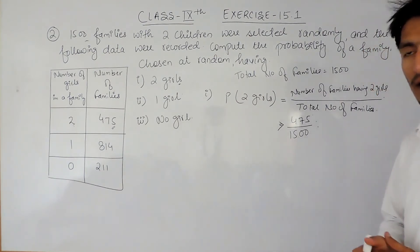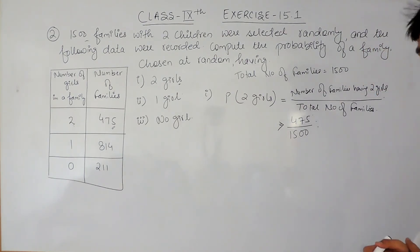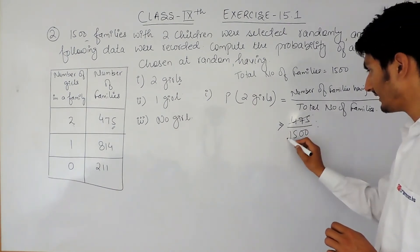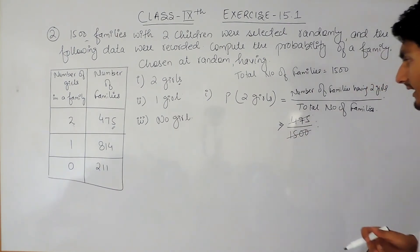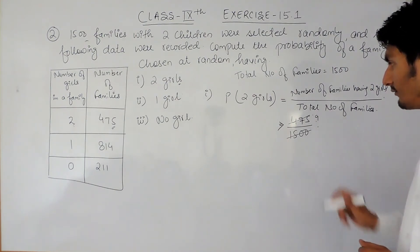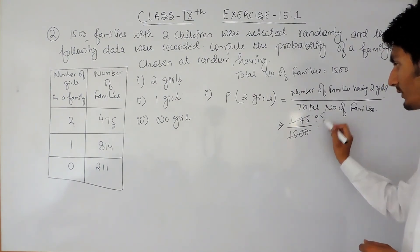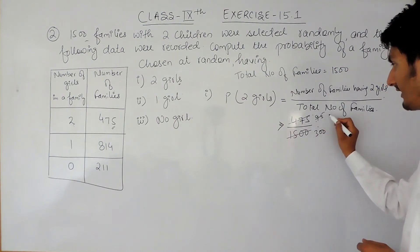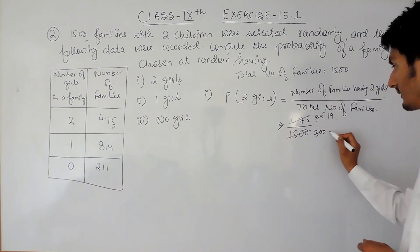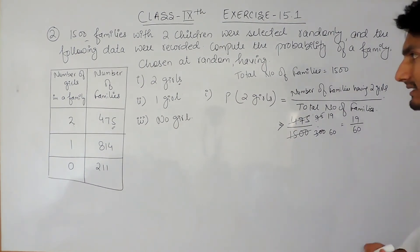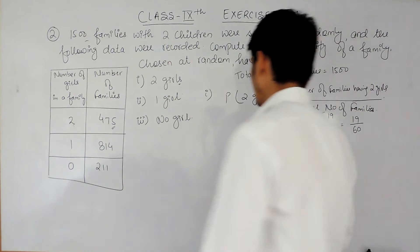This is our first answer. Now if we simplify further, we can cancel by 5: 475 divided by 1500 simplifies to 95 over 300, and again by 5 to give 19 upon 60. So the probability of having two girls is 19/60.